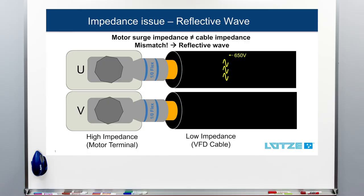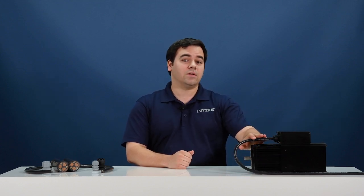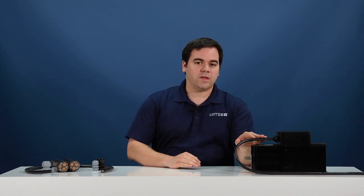Let's go to the whiteboard to discuss this in a little more detail. When an electrical pulse crosses a barrier from a low impedance pathway like a cable to a higher impedance pathway like a motor terminal, the flow is disrupted and some of the waveform is reflected backwards. This reflected wave combines with incoming waveforms to cause high voltage spikes. One way to reduce this effect is to match the impedance value of the cable to the impedance value of the motor so that the energy can flow with less disruption. Because motor terminals have a high impedance value and the cable is intended to be a low impedance pathway, when we bring the cable impedance closer to the motor impedance, less energy is reflected back.